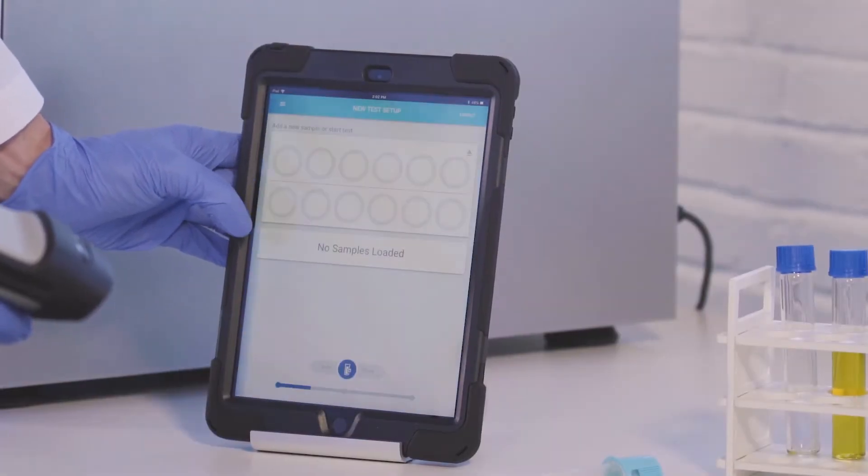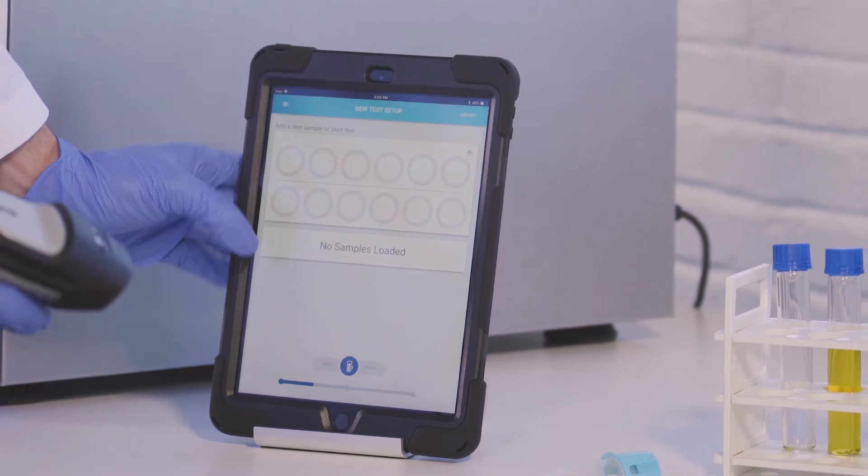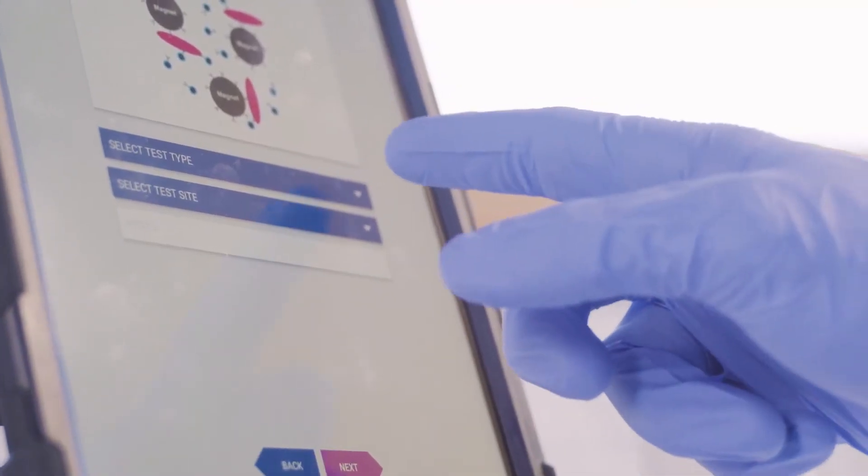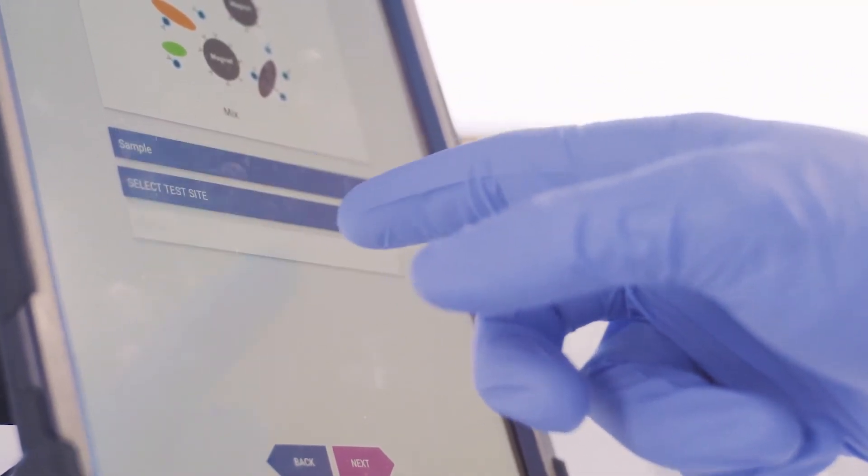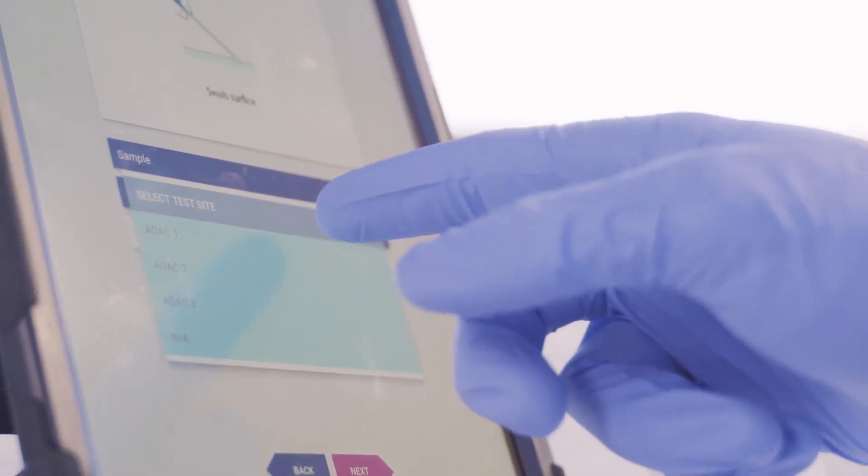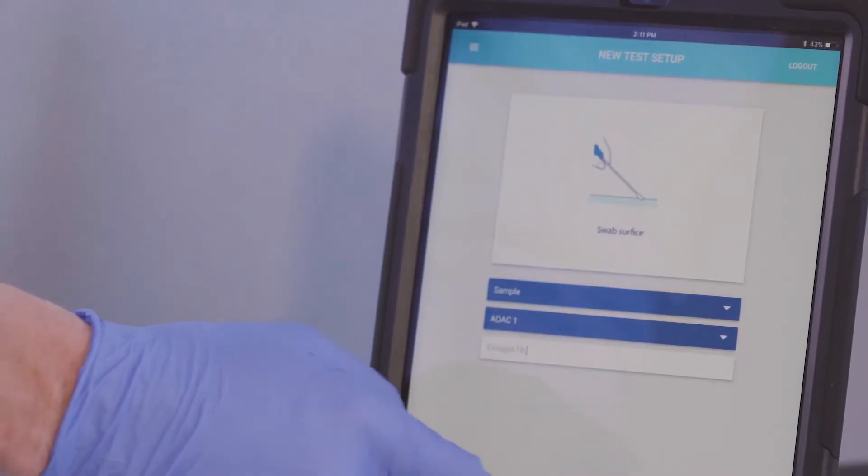With environmental samples locked and ready, use the control pad to start the test by simply clicking on New Test Setup. Next, select the type of test, the pre-programmed test site number and location.